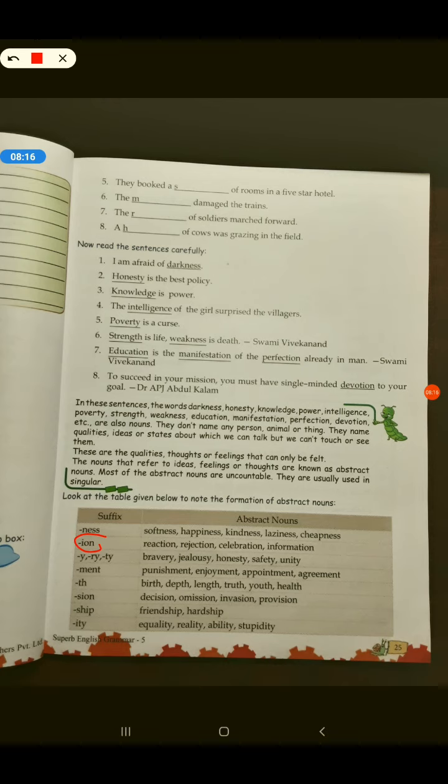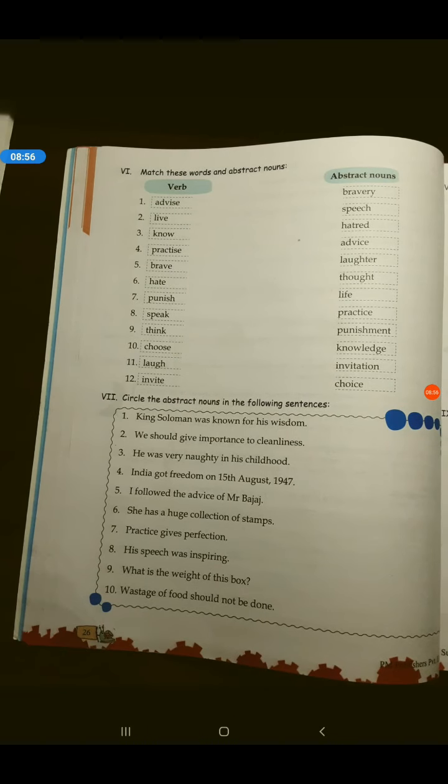Then ion. Rejection, reaction, celebration, information. Inke root words kya honge? Reaction ka hoga react, rejection ka hoga reject, celebration ka hoga celebrate, information ka hoga inform. These are all formed from those words with suffix added. Then y, ry and ty. Bravery, jealousy, honesty, safety, unity. Similarly these examples are there, you please read them.